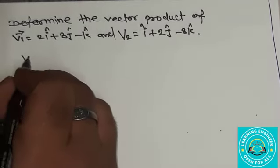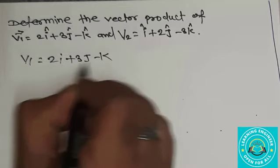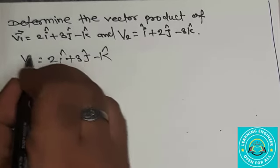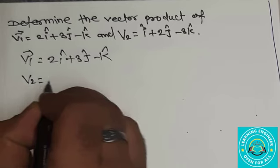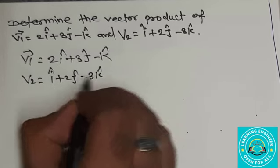So, v1 gives me 2i plus 3j minus k and v2 gives me i cap plus 2j cap minus 3k cap.